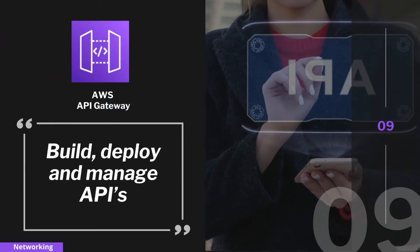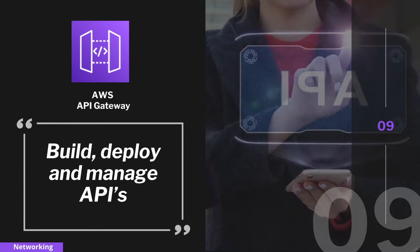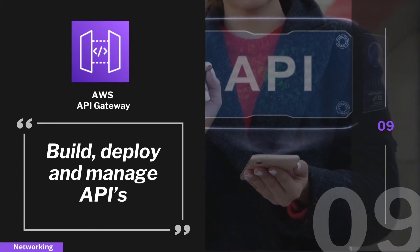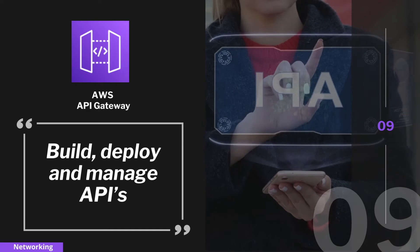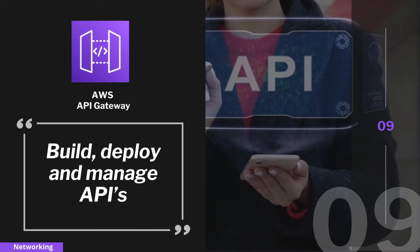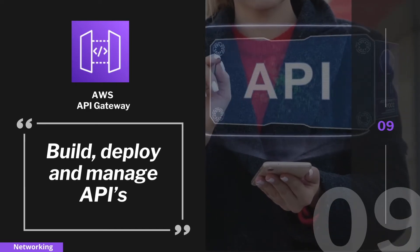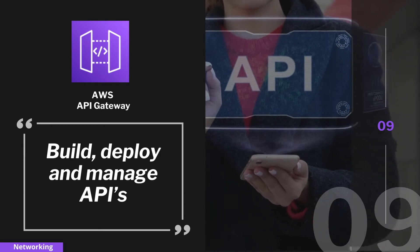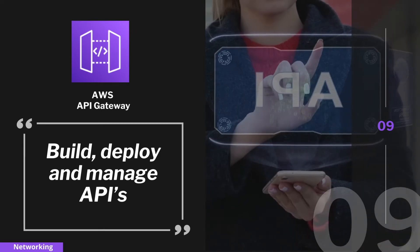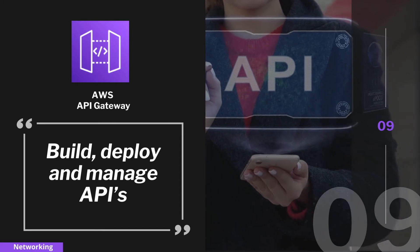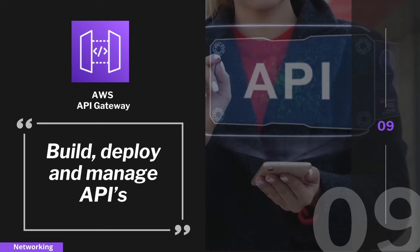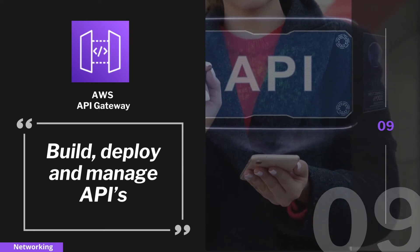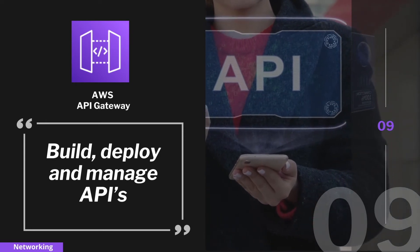Another amazing service is AWS API Gateway. It makes it easy to create, publish, monitor, and secure RESTful and WebSocket APIs. It handles traffic management, authorization and access control, throttling, monitoring, and API version management. API Gateway can process hundreds of thousands of concurrent API calls. It's a fully managed service and you pay only for the API calls your application receives and the amount of outgoing traffic.